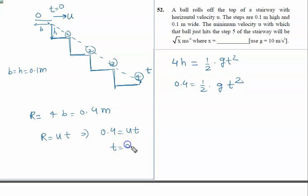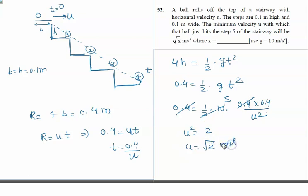From this equation we will write t equal to 0.4 upon u. So 0.4 equal to half g t square. g is 10, t square is 0.4 into 0.4 upon u square. 0.4 cancels, 2 times 5 is 10, 5 times 4 is 20, but it is 0.4 so it is 2. Therefore u square equal to 2, or u equal to root 2 meter per second.